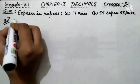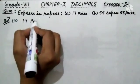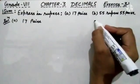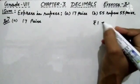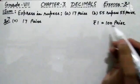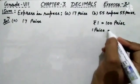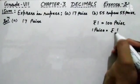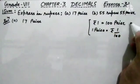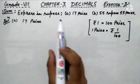Before starting the first part, solution of first part is 17 paise. Let us understand the conversion of rupee into paise. As we all know, 1 rupee is equals to 100 paise, and 1 paise is equals to rupees 1 upon 100. Keep this in mind whenever we are using the conversion of rupees into paise or paise into rupees.